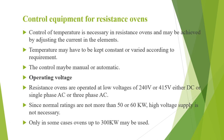Control equipment for resistance ovens — control of temperature is necessary in resistance ovens and is achieved by adjusting the current in the elements, so temperature can be kept constant or varied according to the requirement, either manually or automatically. Operating voltage: resistance ovens operate at low voltages of 240V or 415V, either DC, single phase AC or 3-phase AC supply. Since normal ratings are not more than 50 to 60 kW, high voltage supply is not necessary.